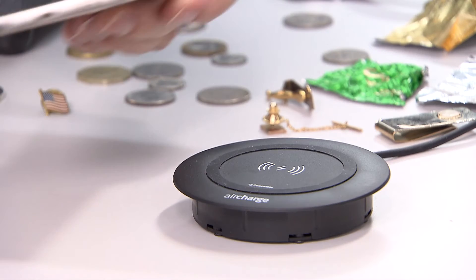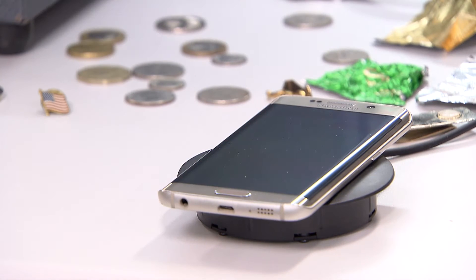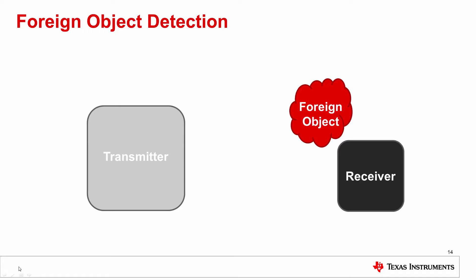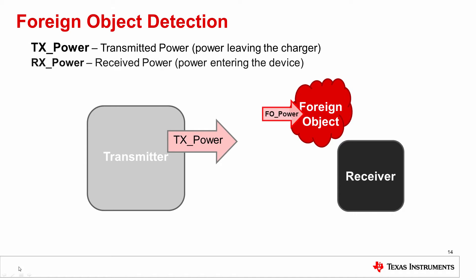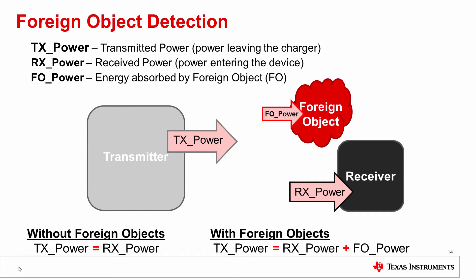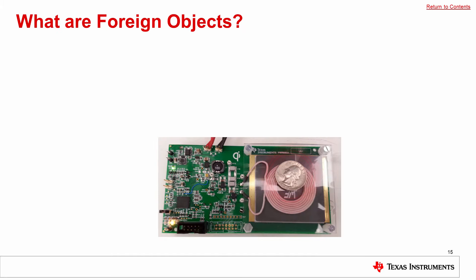When a receiver is placed on the transmitter, the transmitter will begin to send power to the receiver, which in turn will negotiate for the power it needs for its system. During normal operation with no foreign object, the power transmitted equals the power received. When a foreign object is inserted into the system, it will absorb some of the energy sent from the transmitter, and the receiver will then need to request more power from the transmitter to compensate for the power lost to the foreign object.